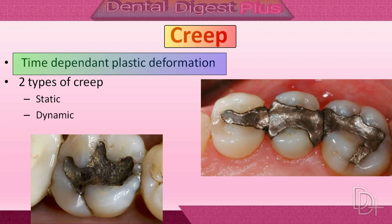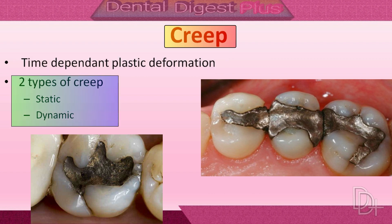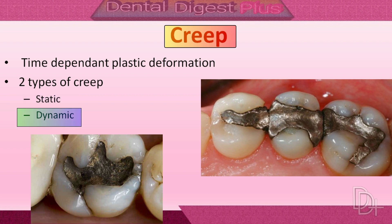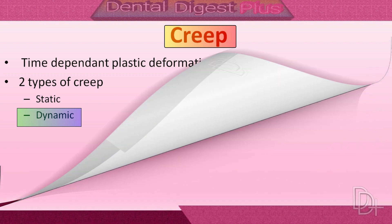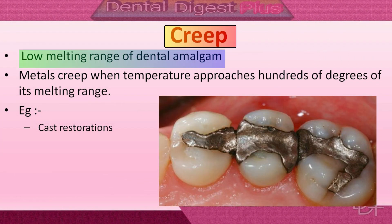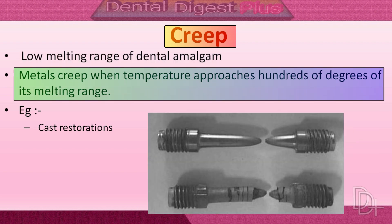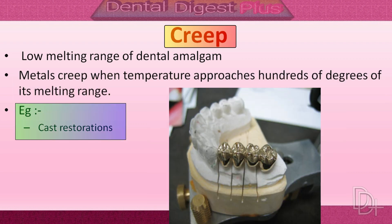Creep is the time-dependent plastic deformation of a material under static load or constant stress near its melting point. There are two types: static creep, which occurs under constant load, and dynamic creep, which occurs under changing load. Because of its slow melting range, dental amalgam can slowly creep from a restored tooth site under periodic sustained stress. Creep can also be seen in metal when temperature approaches hundreds of degrees of its melting range, as in cast restorations.